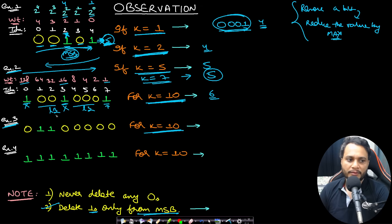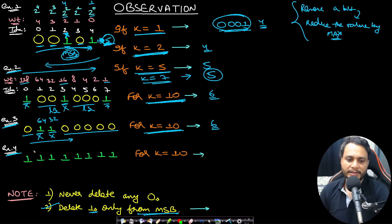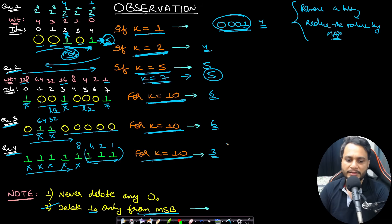For another example with k=10: the value is 32+64=96, greater than 10. Remove the first set bit → value=32, still greater than 10. Remove the second set bit → value=0. The length is 1 plus 5 leading zeros = 6. In yet another example with k=10, removing four bits still exceeds 10, so remove one more bit. Once the value becomes less than or equal to 10, the remaining length is 3, so the answer is 3.